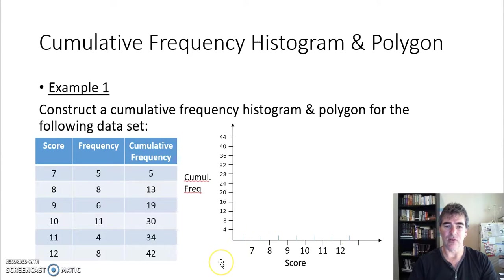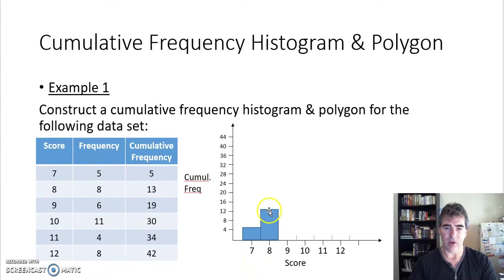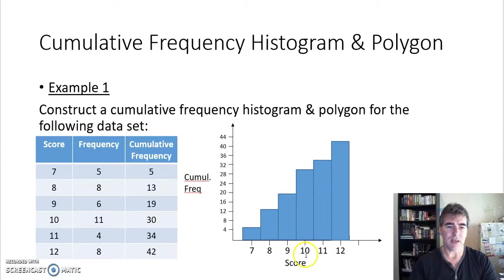And if you've got grid paper or a grid book, it certainly makes constructing this a lot easier. So my score of seven, its cumulative frequency is five, so I've got to come up to five, which is a little bit above the four. So we do that. And as I said, if you've got grid paper, you will be a lot more accurate than what I am here. But that's pretty close to my five there if we go across. My score of eight, its cumulative frequency is 13, because I've gone five and another eight makes 13. So I have my column going up to 13.